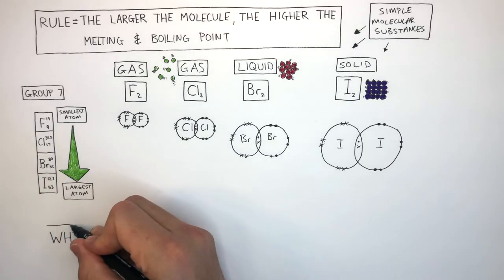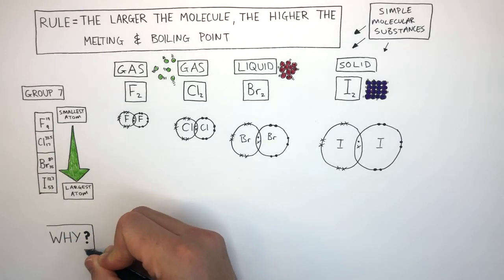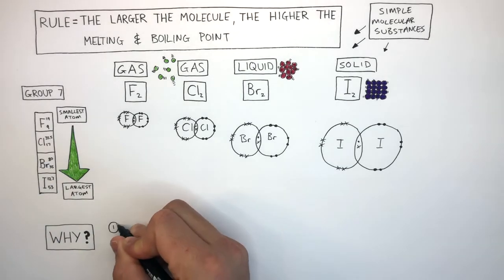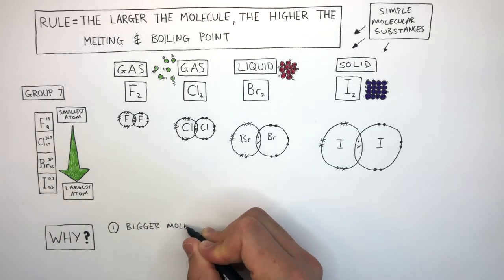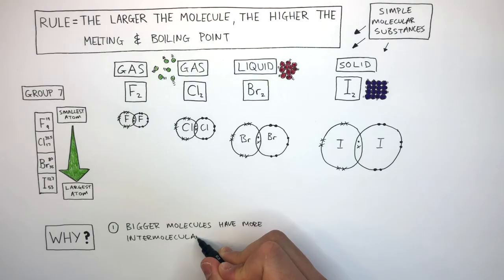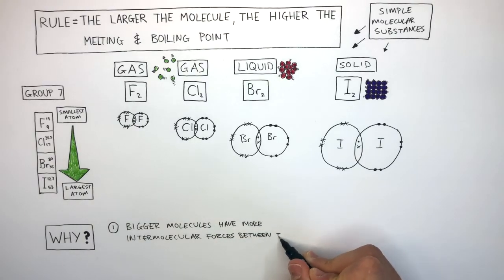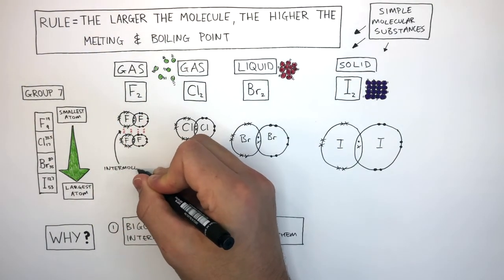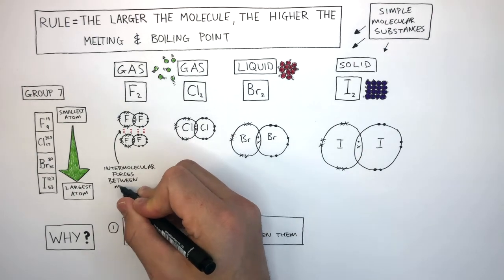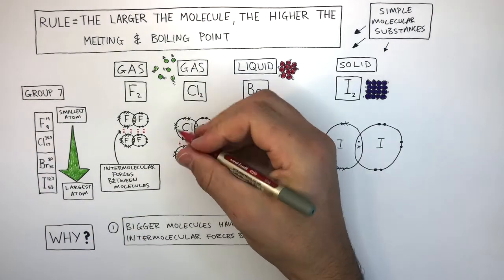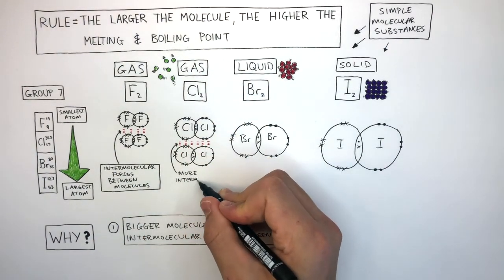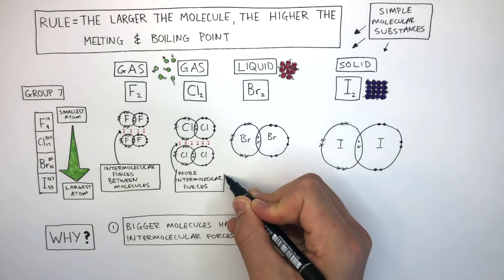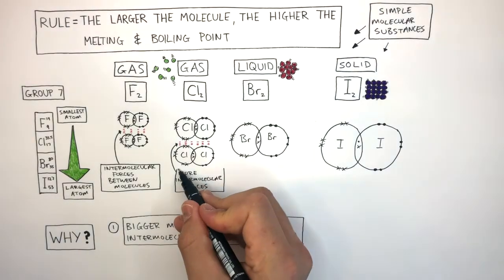So, why is it the larger the molecule, the higher the melting and boiling point? Well, bigger molecules have more intermolecular forces between them. These red lines represent the intermolecular forces between the molecules. You can see how there are more intermolecular forces between the chlorine molecules because they're bigger.